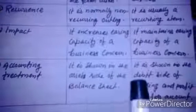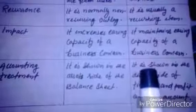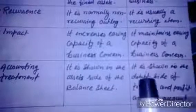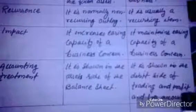Fifth, on the basis of accounting treatment: capital expenditure is shown on the asset side of the balance sheet, whereas revenue expenditure is shown on the debit side of the trading or profit and loss account.